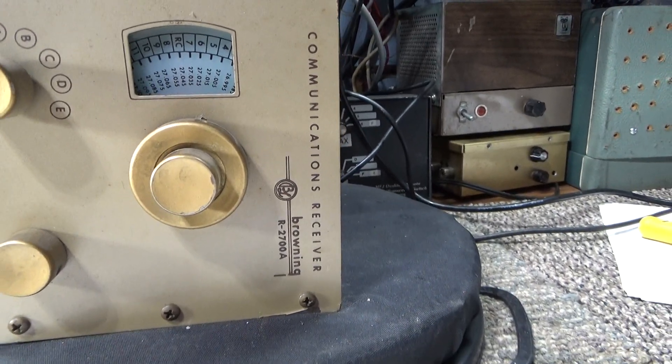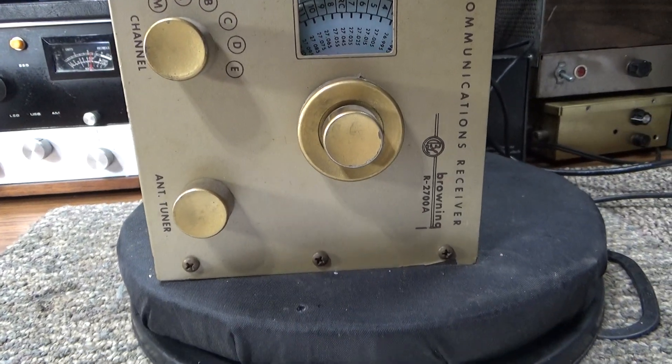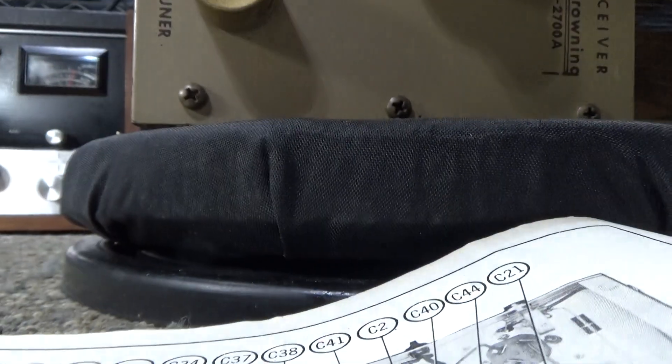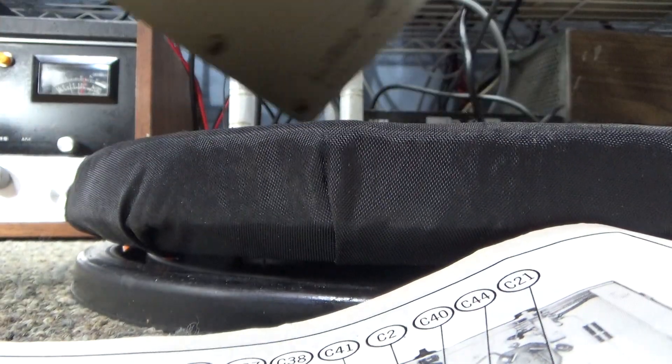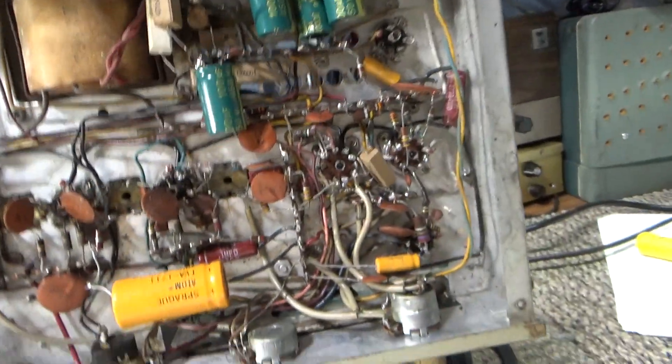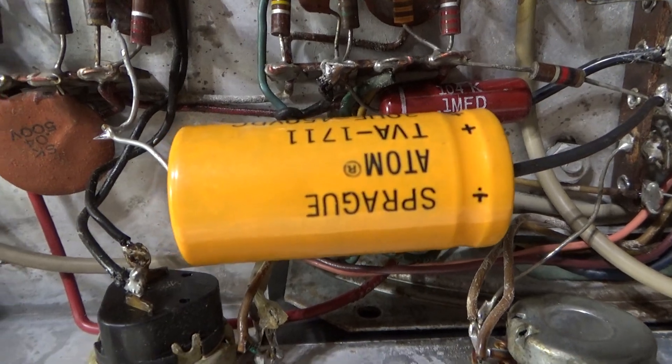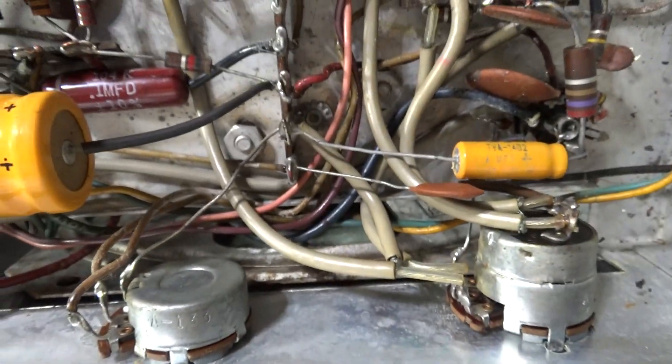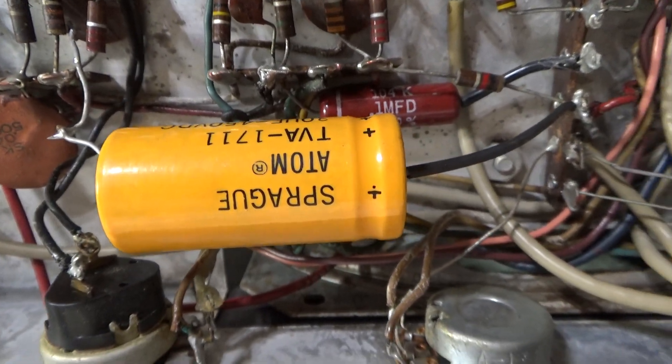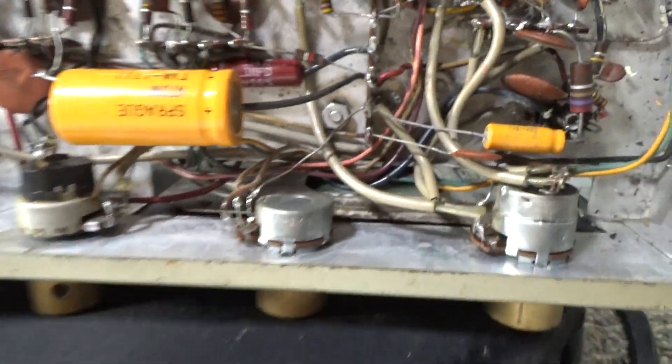We're going to set the camera down and turn the radio on its side here. This big yellow cap here, which is not the original cap, but that's the location area of the pin cap in the R2700 series of radios.